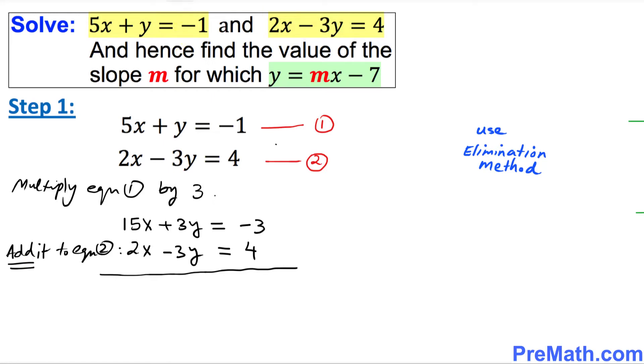Just make sure once we add this, these two quantities positive 3y and negative 3y are gone. So we ended up with 17x equal to 1. Divide both sides by 17, which tells us that x turns out to be 1 over 17. This is our x value.